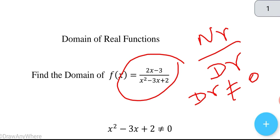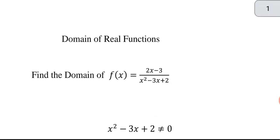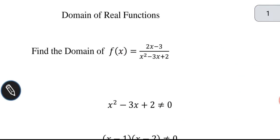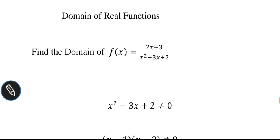In order to find the domain, the denominator should not be equal to zero. If the denominator is zero, the entire function becomes infinity. The numerator is 2x and the denominator is the quadratic equation x² - 3x + 2, which must not equal zero.